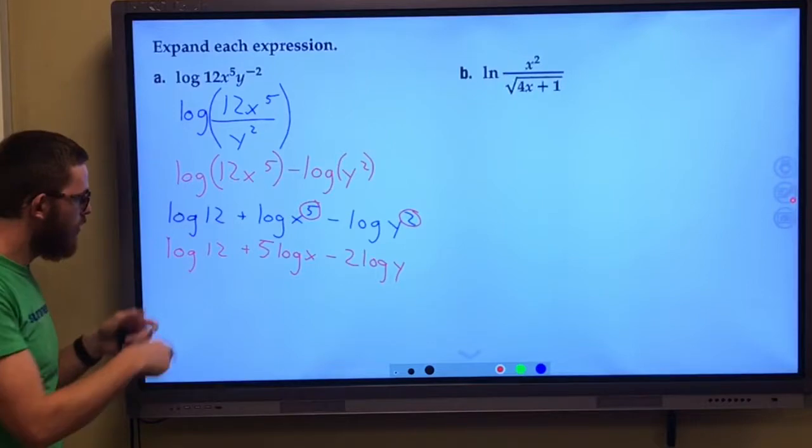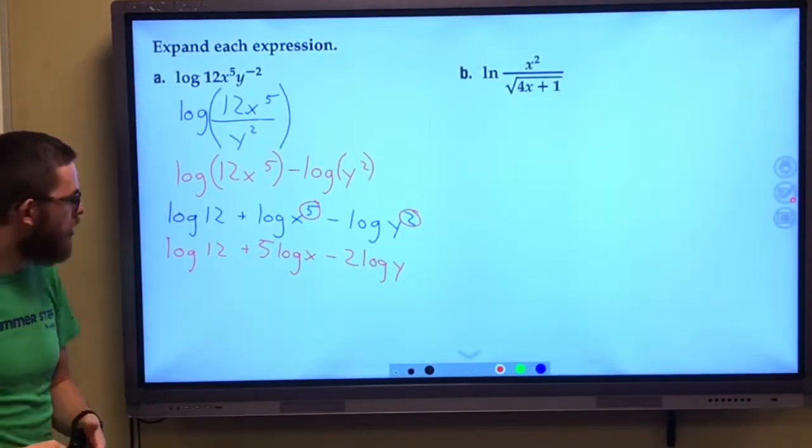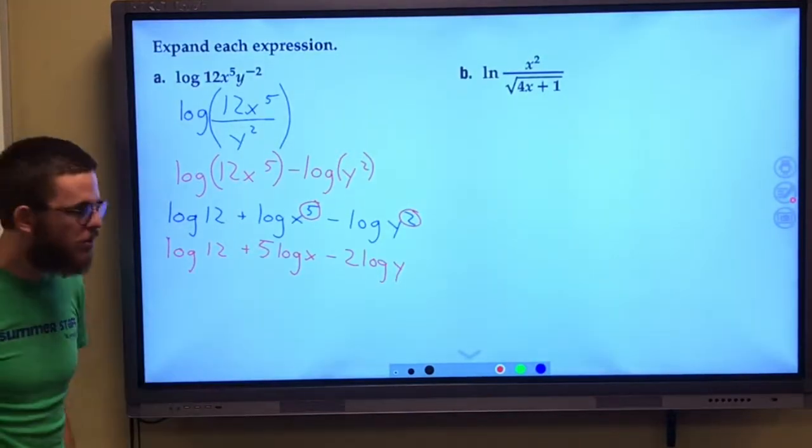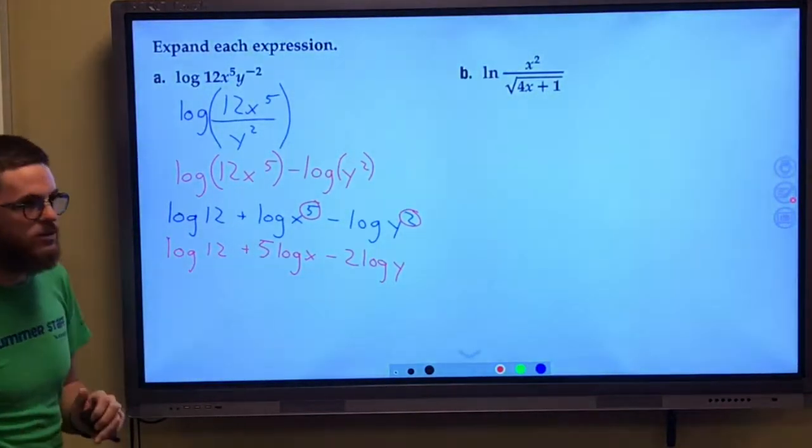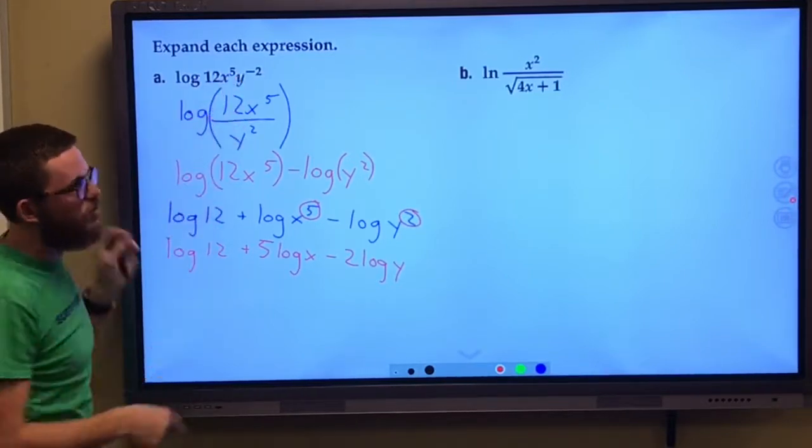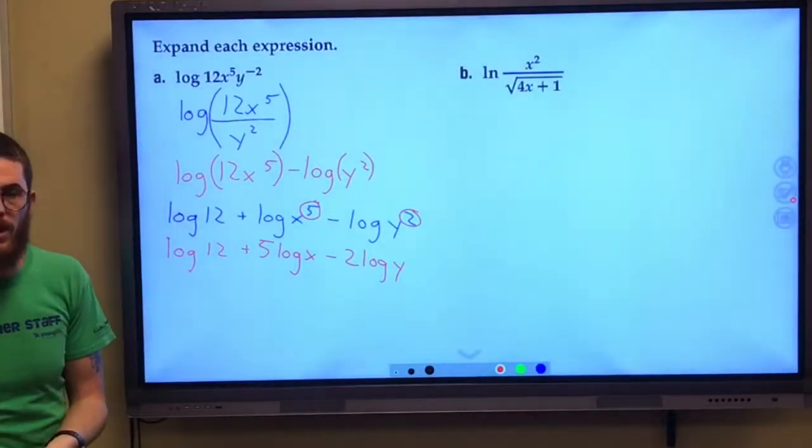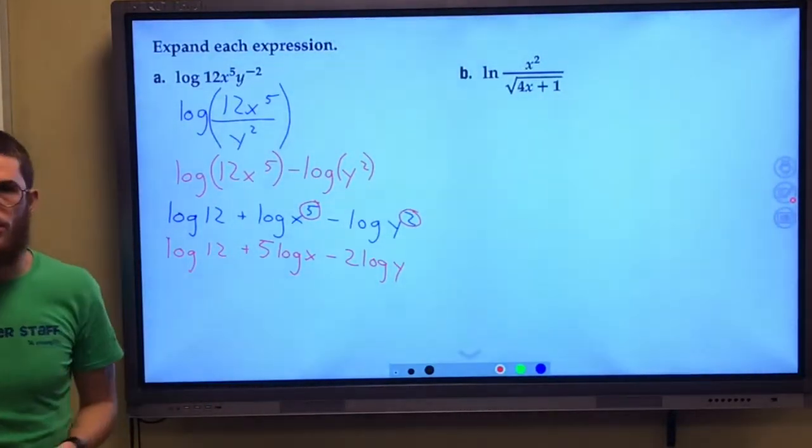You always could take this log of 12, break it down to be log of 4 plus log of 3, and just keep going with it. But I think this is good. We've really separated those kind of three things. We see they're multiplying together. The 12, the x to the fifth power, the y to the power of negative 2. And that's how it all breaks down.